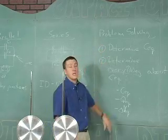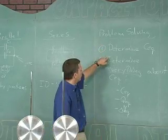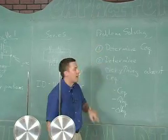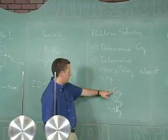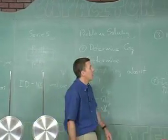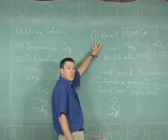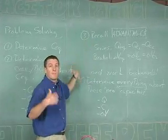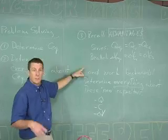There are four steps to determining all the information surrounding a capacitor. One, determine the equivalent capacitance. Two, determine everything you know about that equivalent capacitor: the capacitance, the charge, and the potential difference. Three, don't forget your advantages. These are what steer your train of thought in the solution. Then work backwards.